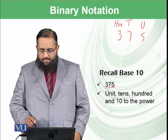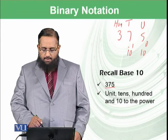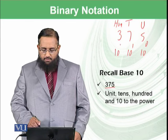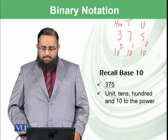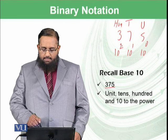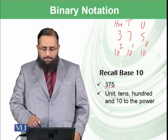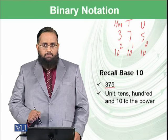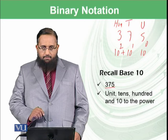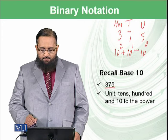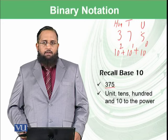You say this is 10 raised to power 0, this is 10 raised to power 1, and this is 10 raised to power 2. Because when you want to translate 375, you say 10 raised to power 2 which means 100 multiplied by 3 which forms 300, plus 10 multiplied by 7 which is 70, plus 10 raised to power 0 means 1, 1 into 5. So it becomes 375.